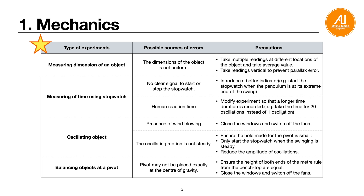Next: the oscillating object. If there's wind blowing, this might be a source of error, so close the window and switch off the fan. Another issue is that the oscillating motion may not be steady — when you release the pendulum, the swinging motion is initially not steady. Usually, only start the stopwatch when the swinging motion is steady, or ensure the hole for the pivot is small.